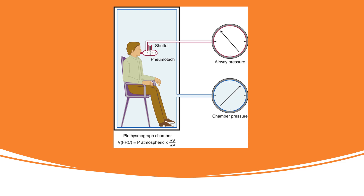Here are additional diagrams showing what happens on inspiration versus expiration within the body box. We look at box pressure and time — when the patient exhales, the flow signal becomes positive and box pressure becomes negative. When inhaling, the flow signal is negative and box pressure is positive. This changing relationship between box pressure and flow allows us to measure the patient's thoracic space changes and calculate functional residual capacity using atmospheric pressure times the change in volume over the change in pressure.